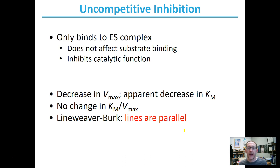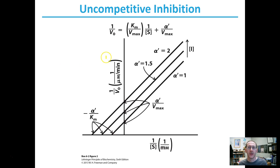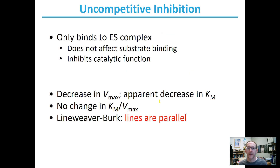For uncompetitive inhibition, both KM and VMAX decrease but the KM/VMAX doesn't change, so the lines are parallel. Uncompetitive means the inhibitor only binds to the enzyme-substrate complex, not to the free enzyme. Since the slopes are the same you can't use them, but you can use the y-intercept. The y-intercept is alpha-prime/VMAX. The uninhibited y-intercept is 1/VMAX, and the inhibited one is alpha-prime/VMAX. Dividing the two y-intercepts cancels the 1/VMAX and gives you alpha-prime.